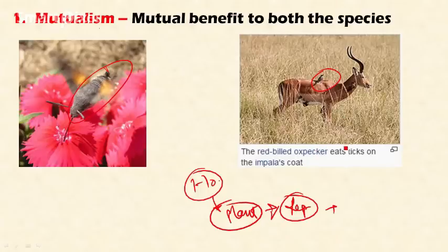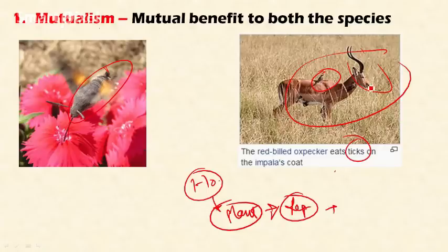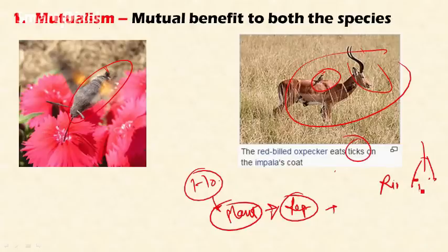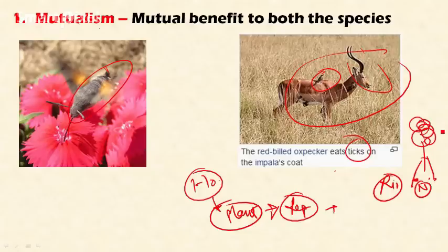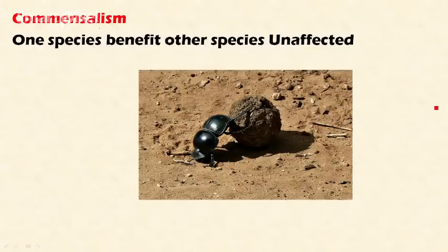Another mutualism example is the red-billed oxpecker bird, which eats ticks off the impala. The bird gets food and the impala is freed from tick infestation — both benefit. Another example is the colonization of Rhizobium bacteria in the root nodules of leguminous plants. The Rhizobium fixes atmospheric nitrogen, which the plant uses for survival, while the plant provides space in its nodules for the Rhizobium to sustain itself.